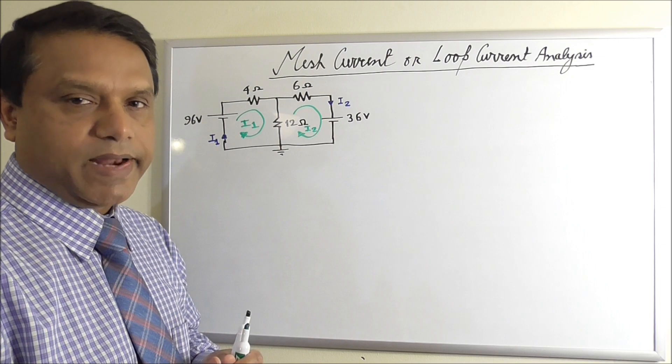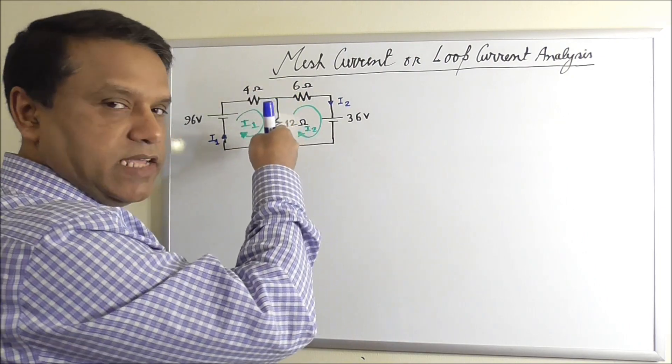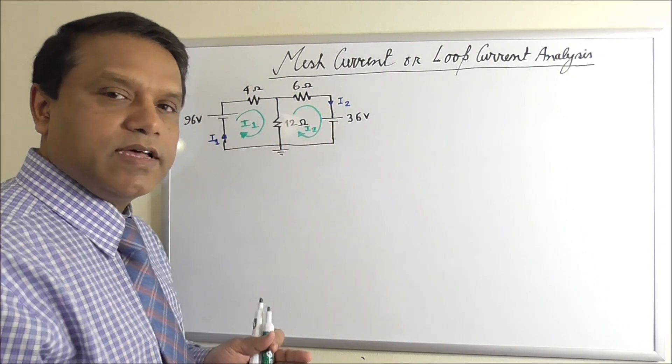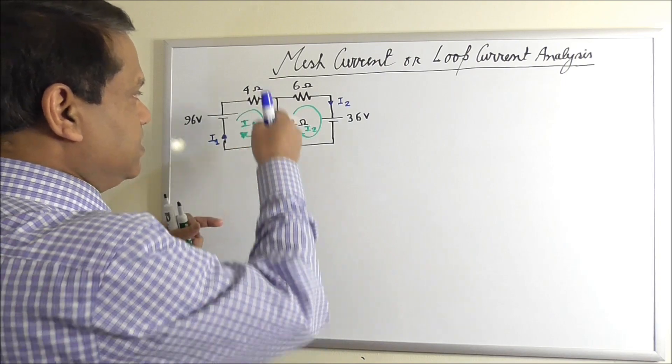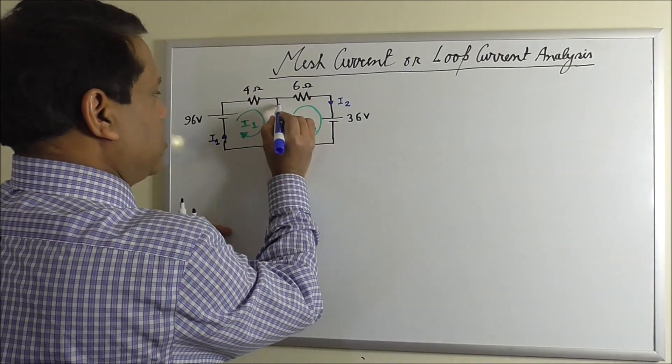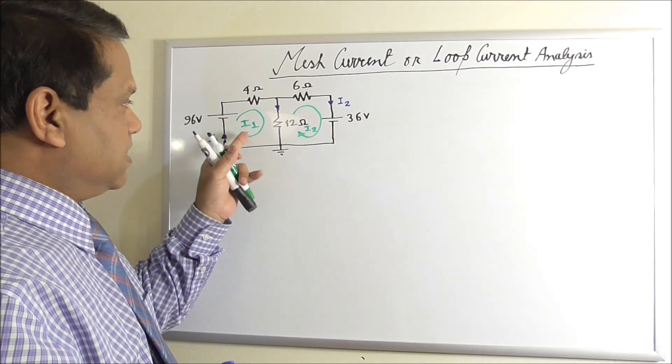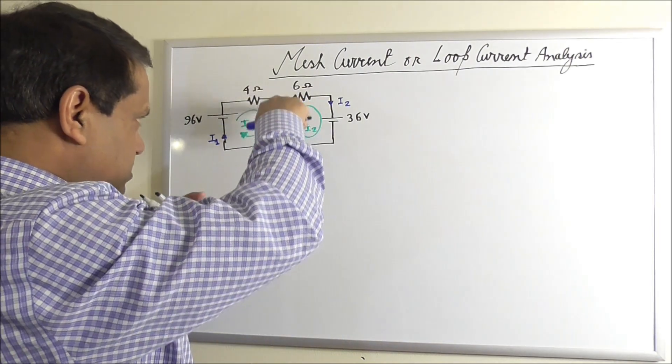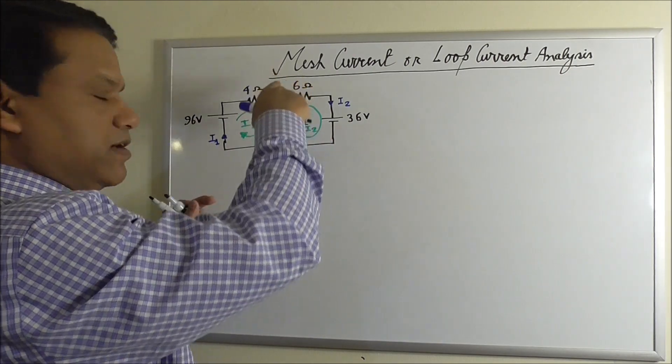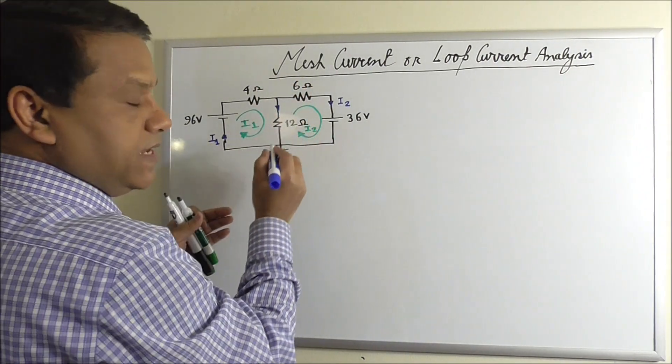The difference will be only in the shared branches. So this is the shared branch between this loop and this loop. So the current in this branch, if you consider this is downward, it will be a combination of these two loop currents. I1 is downward here. You see I1 is downward and I2 is upward. So it will be I1 minus I2.